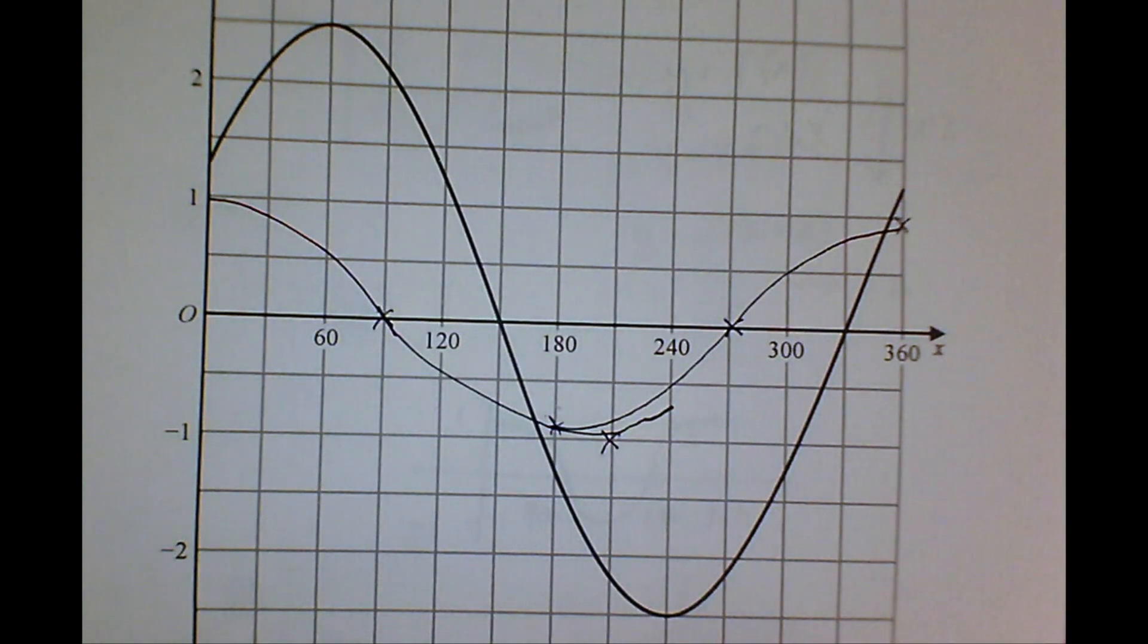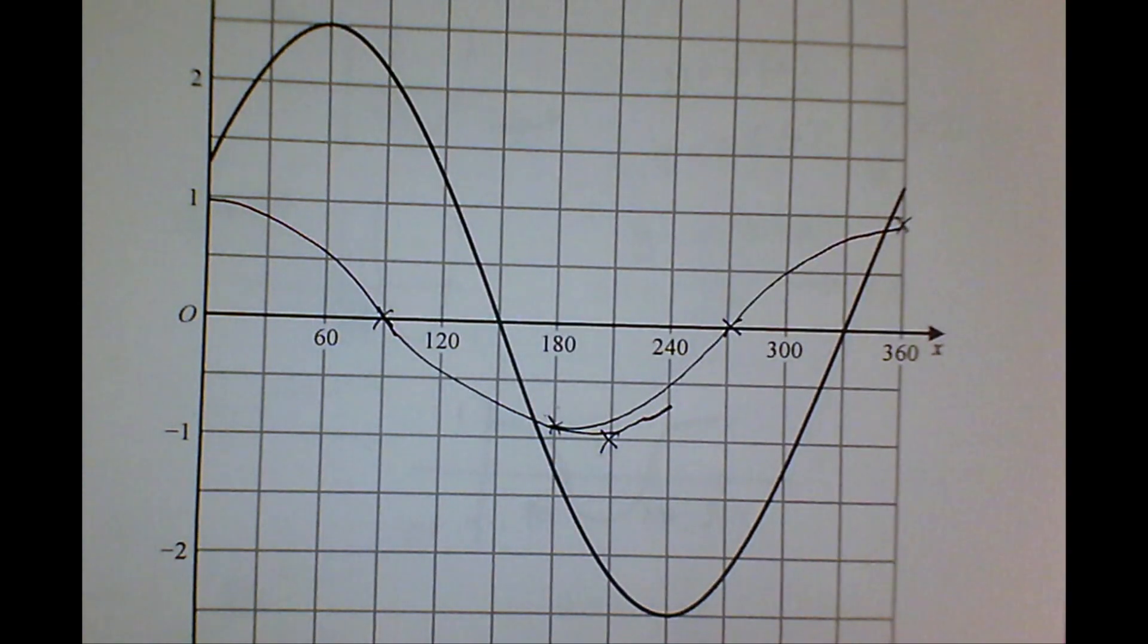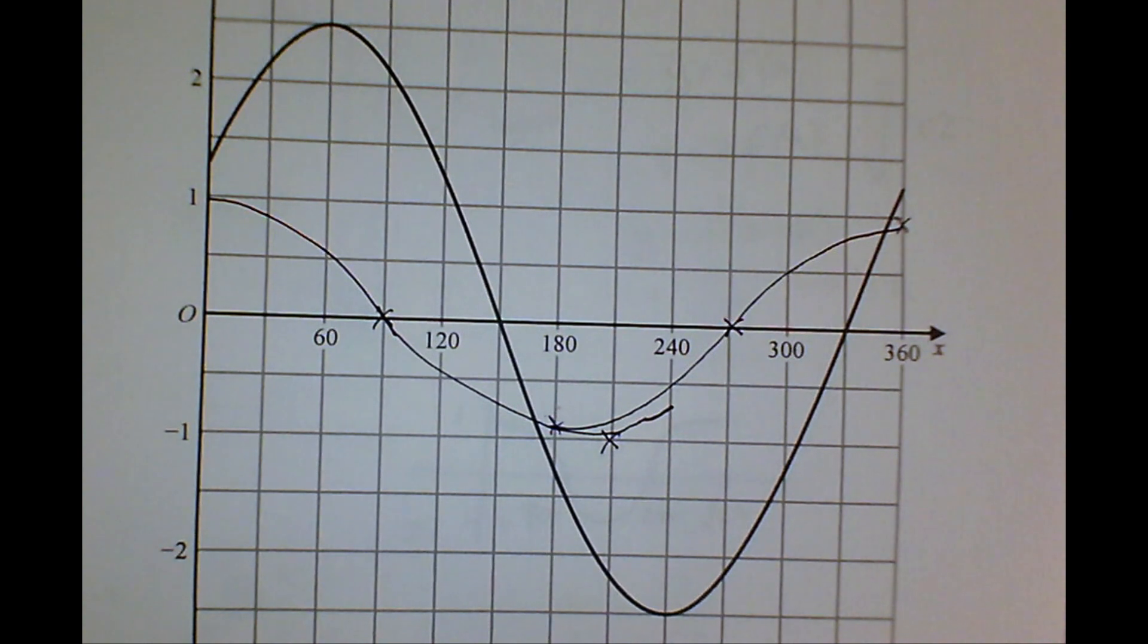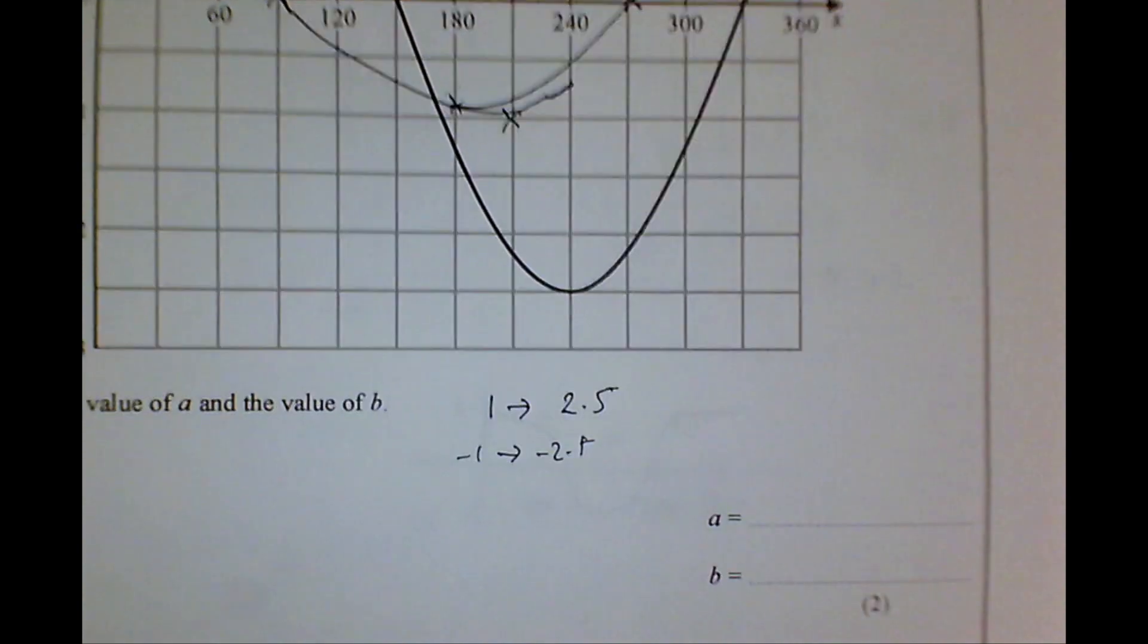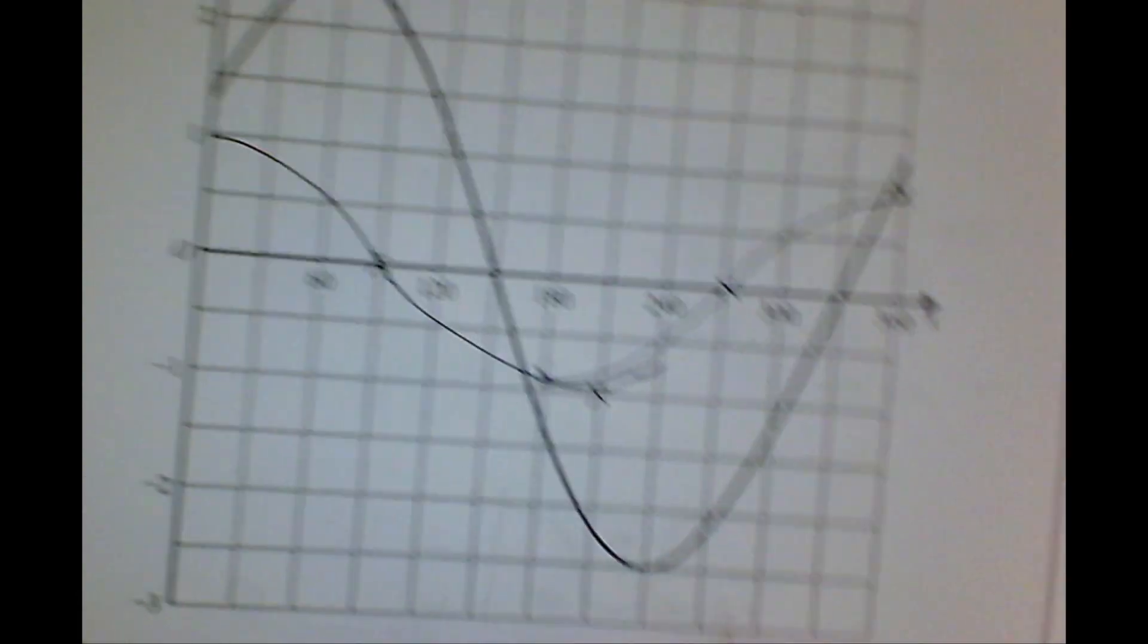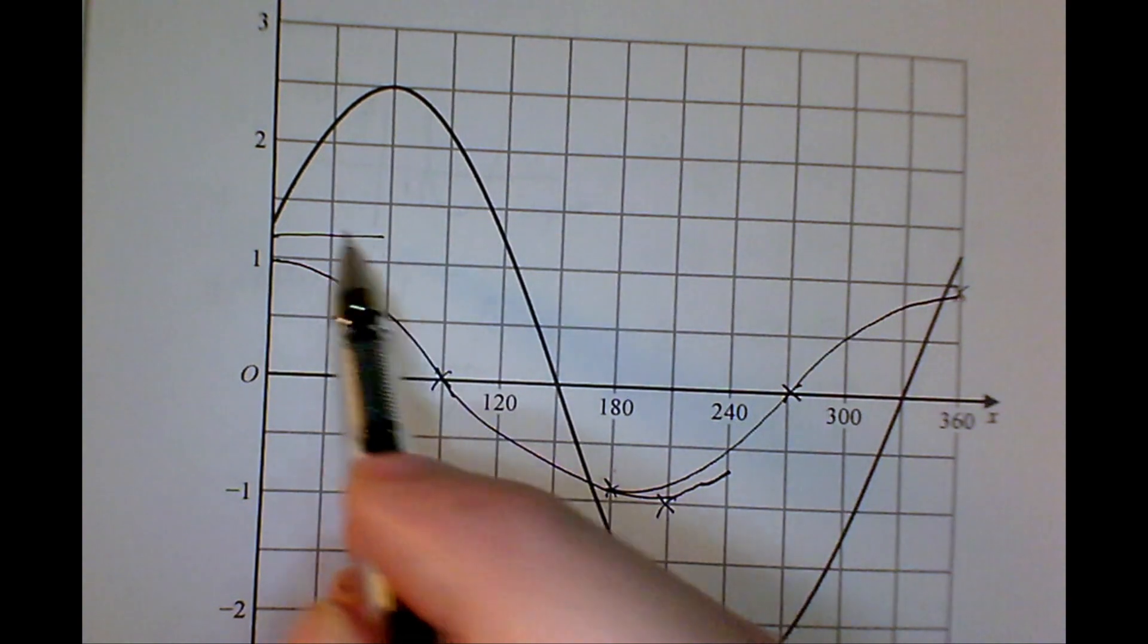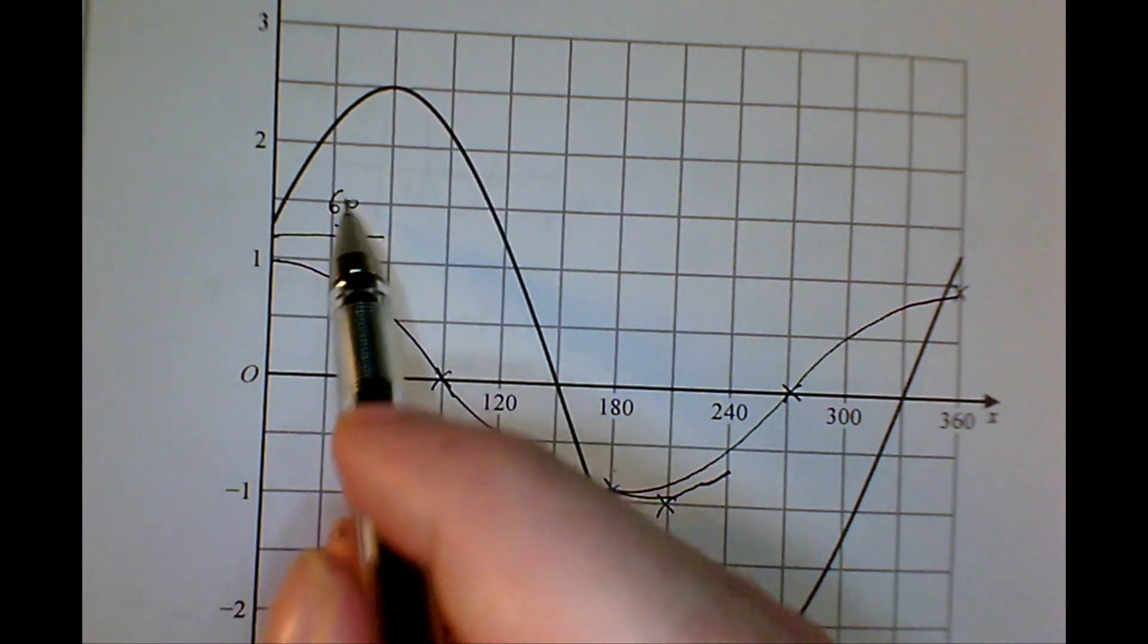So it's gone from being only 1 high, it's gone up to being 2.5 high. And it's been going from minus 1 down to minus 2.5. So it looks like the number on the outside of the brackets is multiplying everything by 2.5. So I think my A number is going to be 2.5. But also, do you see the highest point of my graph? Just go back to it now. The highest point of my graph is not matched up with the highest point of the ordinary cosine wave. It's been moved to the right, 60.